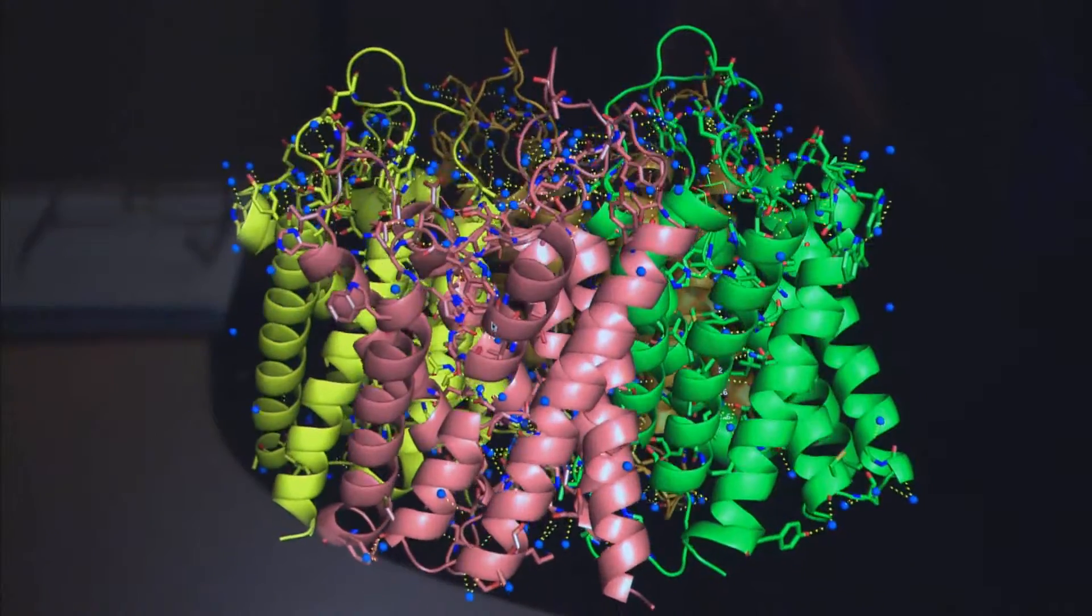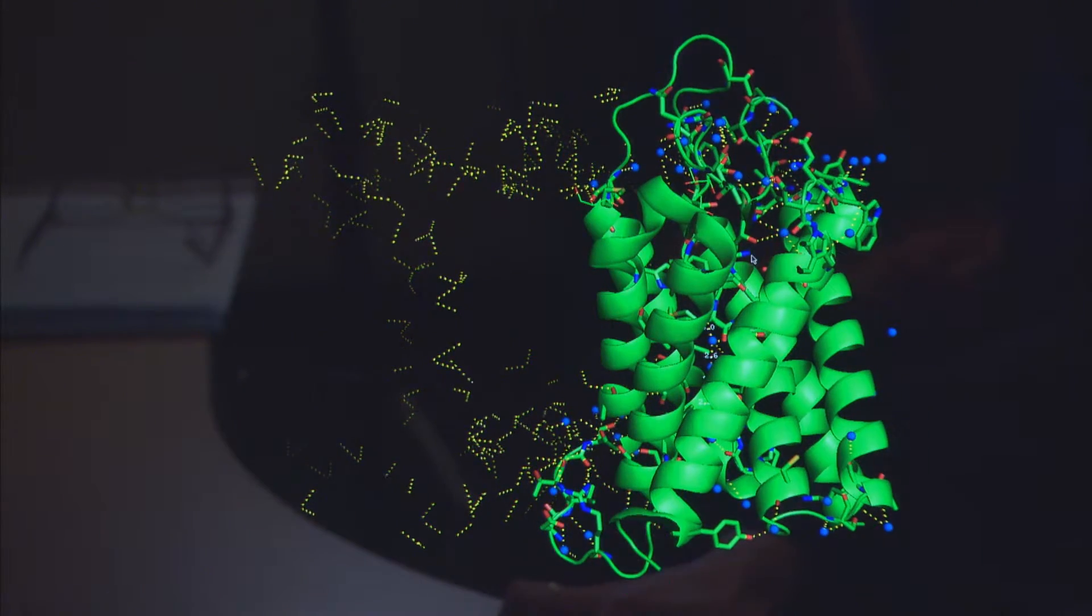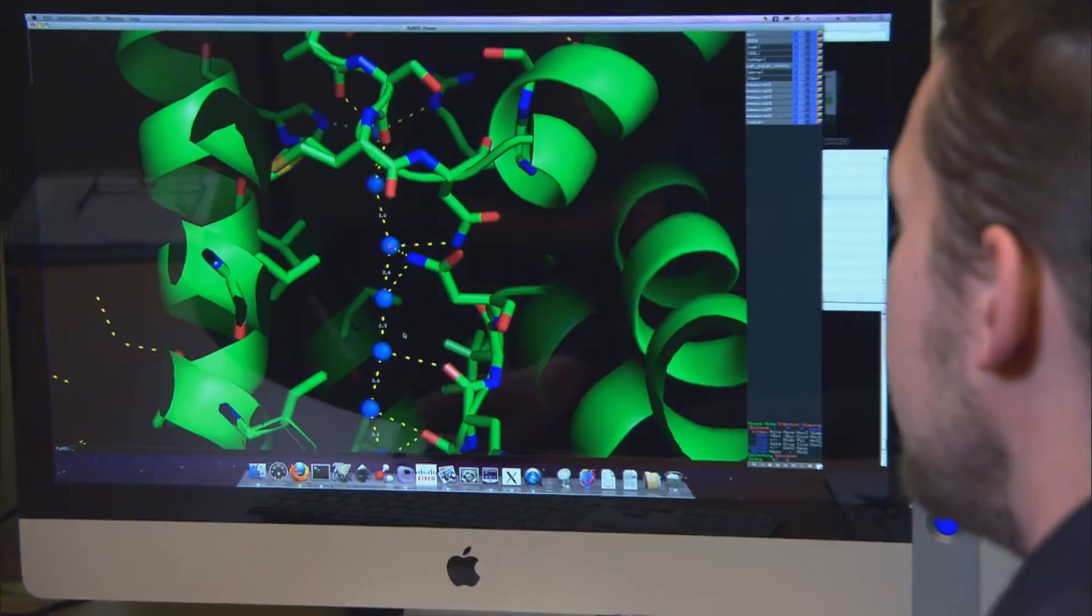In the human body, pores made of a class of proteins called aquaporins efficiently filter ions and transport water. But the pores need certain conditions to work.